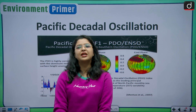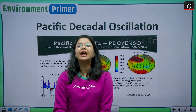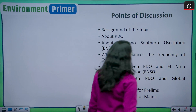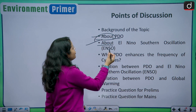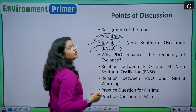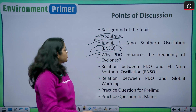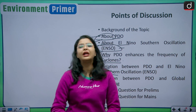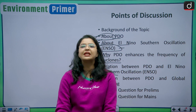Hello and welcome everyone to Drishti IAS English. My name is Pragya and in today's interesting episode of Environment Primer, we are going to study about a fascinating topic of climatic sciences. The title of our today's discussion is Pacific Decadal Oscillation. We will study PDO, then ENSO or El Niño Southern Oscillation, why PDO enhances cyclone frequency, the relation between PDO and ENSO, the relation between PDO and global warming, and finally practice questions for prelims and mains.